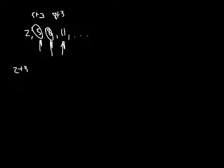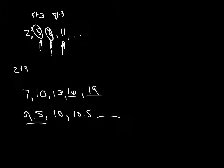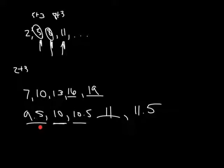In example 14a, given 7, 10, 13, find the next two numbers. From 7 to 10 we add 3, from 10 to 13 we add 3, so 13 plus 3 is 16, and 16 plus 3 is 19. In 14b, given 9.5, 10, 10.5 — we added a half each time. So 10.5 plus 0.5 is 11, and 11 plus 0.5 is 11.5. In each case, going from one number to the next is done by adding the exact same amount every time.